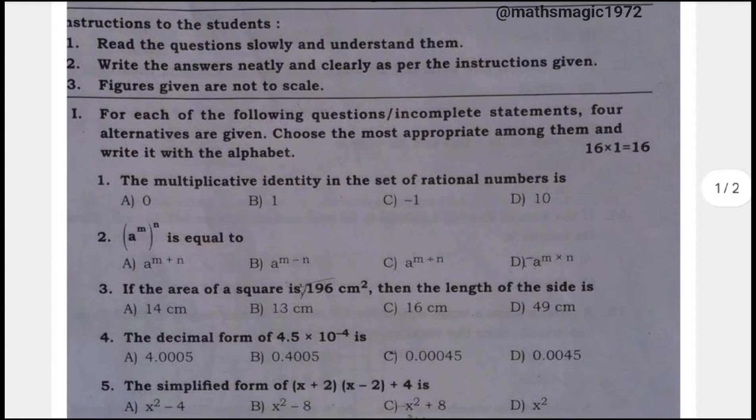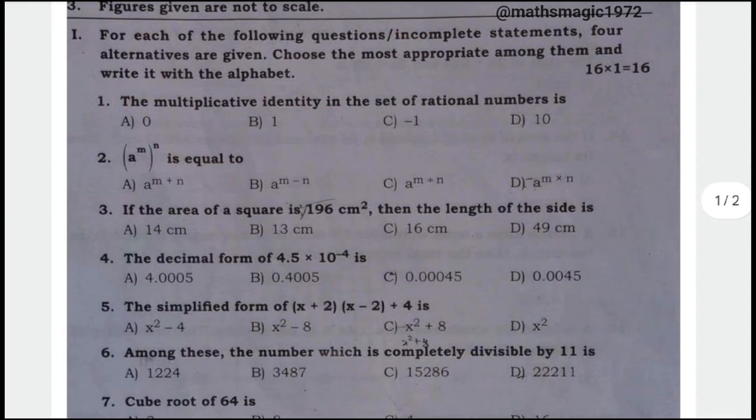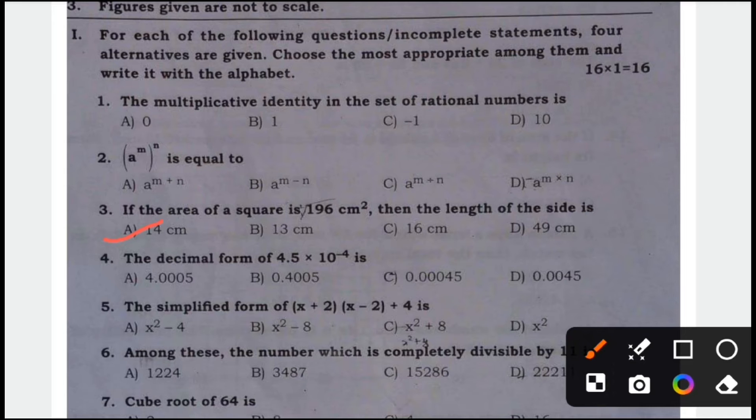If the area of a square is 196 cm square, then the length of the side is option A, 14 cm is the correct answer.